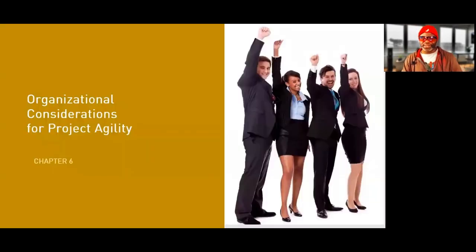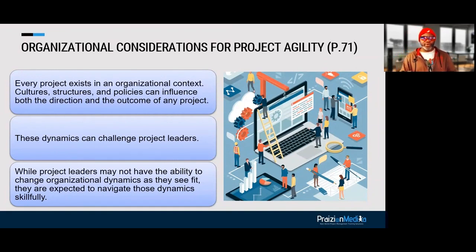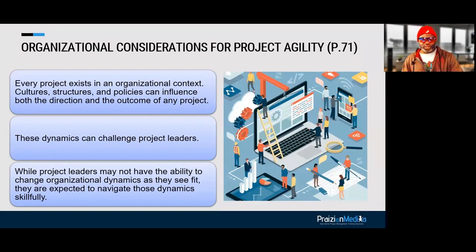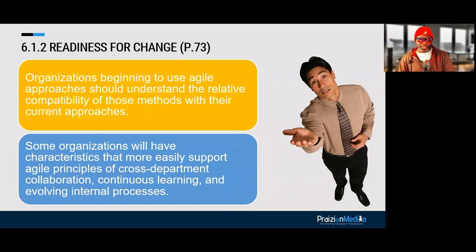Chapter six is organizational considerations for project agility. In the world of Agile, PMOs do exist but they are not draconian — PMOs invite people to a conversation if there's interest. Every project exists in an organizational context; culture, structures, and policies can influence both direction and outcome. If you wanted to introduce Agile to a firm, start with training, coaching at a higher level, use these concepts so management can embrace them, then teach people these practices.